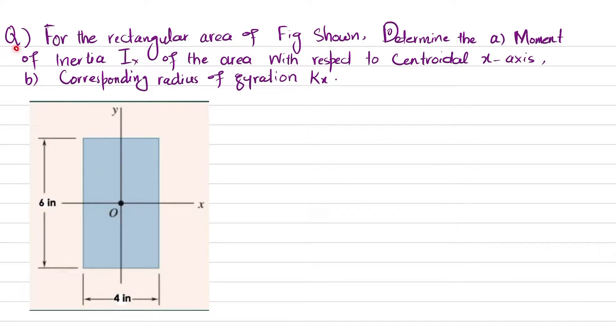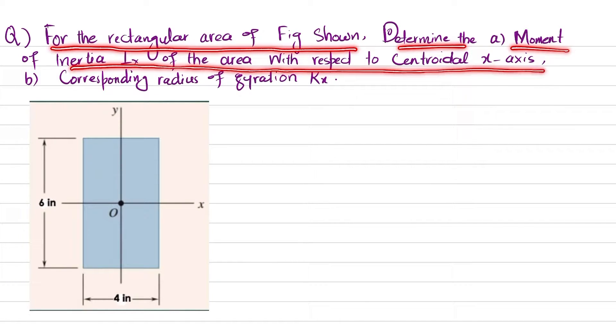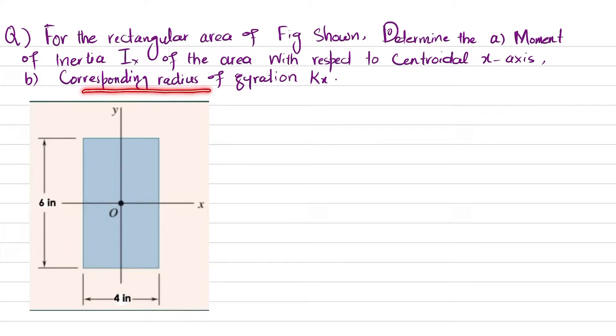Welcome back. Here is another question in which we have been asked to find for the rectangular area of figure shown, determine moment of inertia Ix of the area with respect to centroidal x-axis and corresponding radius of gyration. You can see this is a rectangular cross-sectional area having height is six inch.